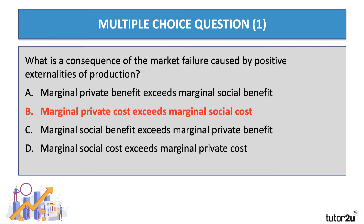If I have a cost of production, and that cost brings down costs for other people — sharing research, for example, if I provide better infrastructure, faster broadband, and that lowers cost for other firms — the social cost is lower than the private cost. So the answer to question one is B.